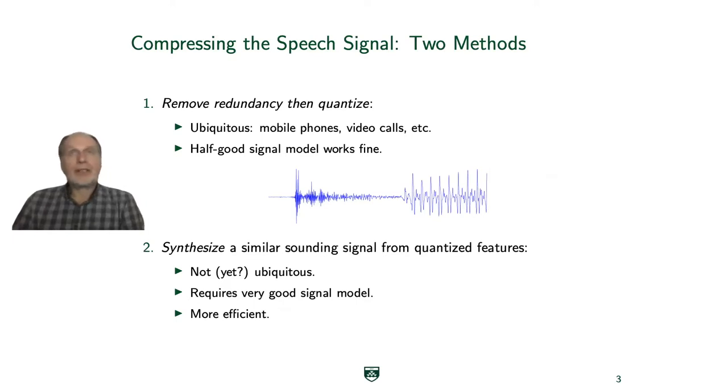Let's look at compression in particular. If we look at compression there are essentially two methods available. The first one is the ubiquitous one at the moment: remove redundancy from the signal and then quantize it.